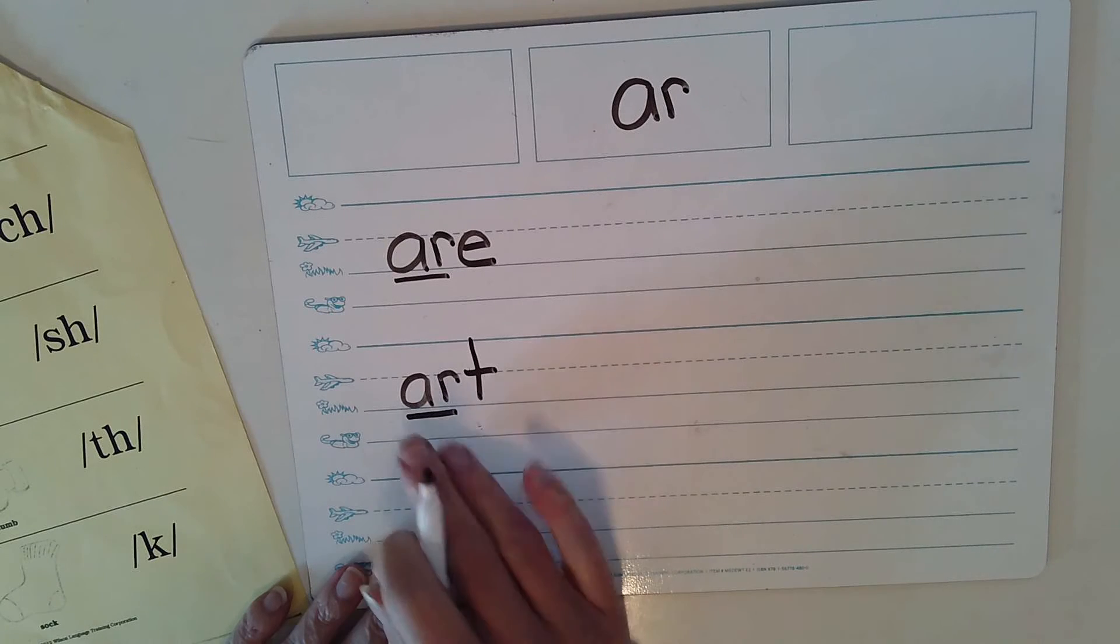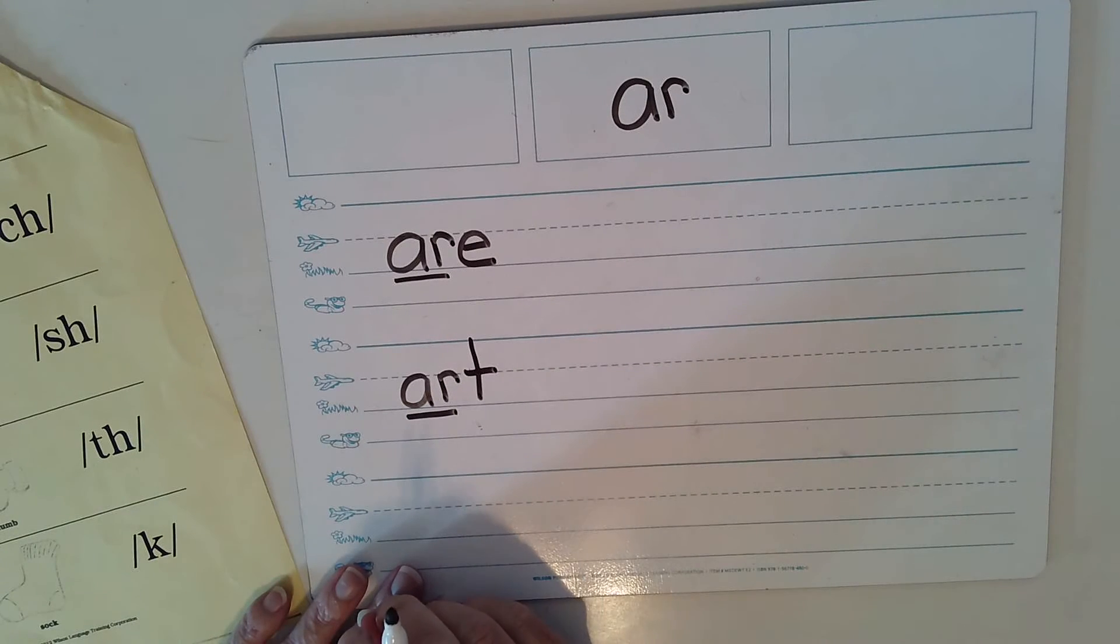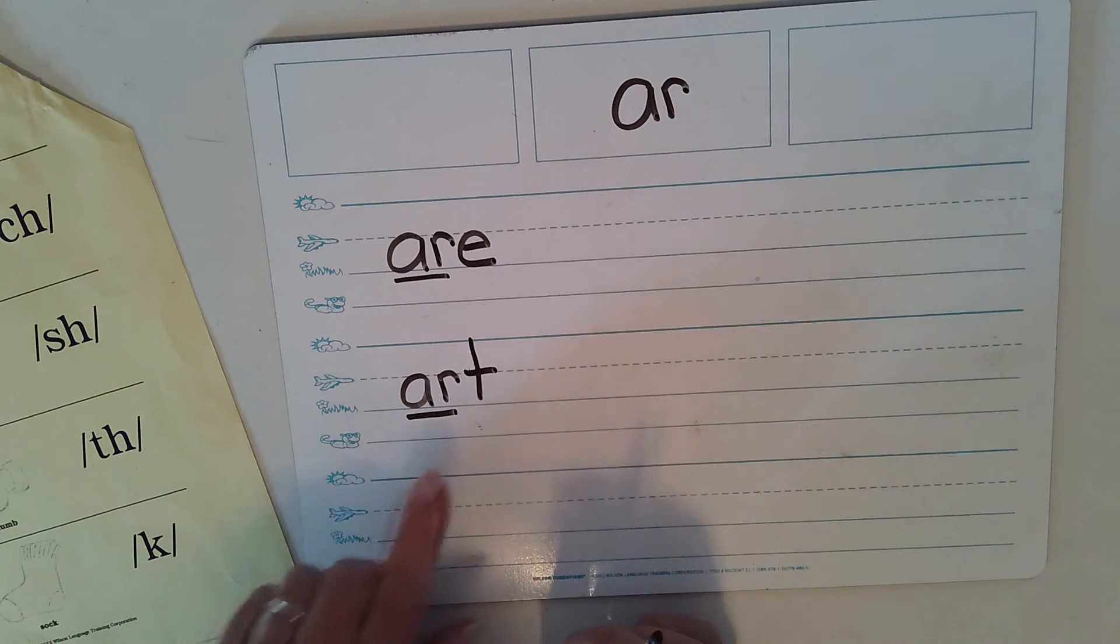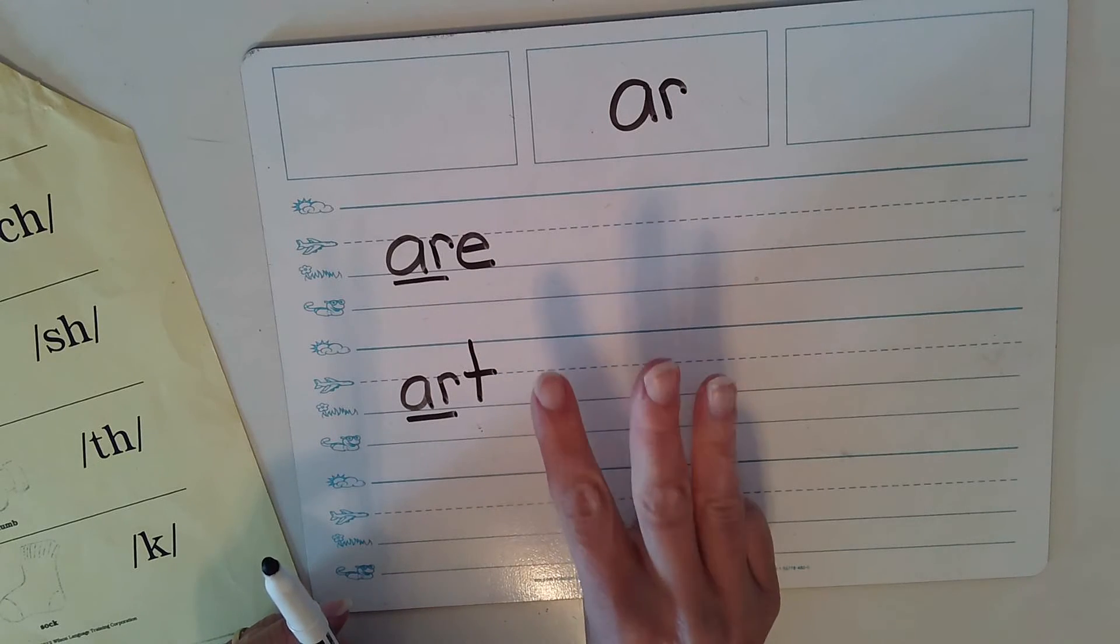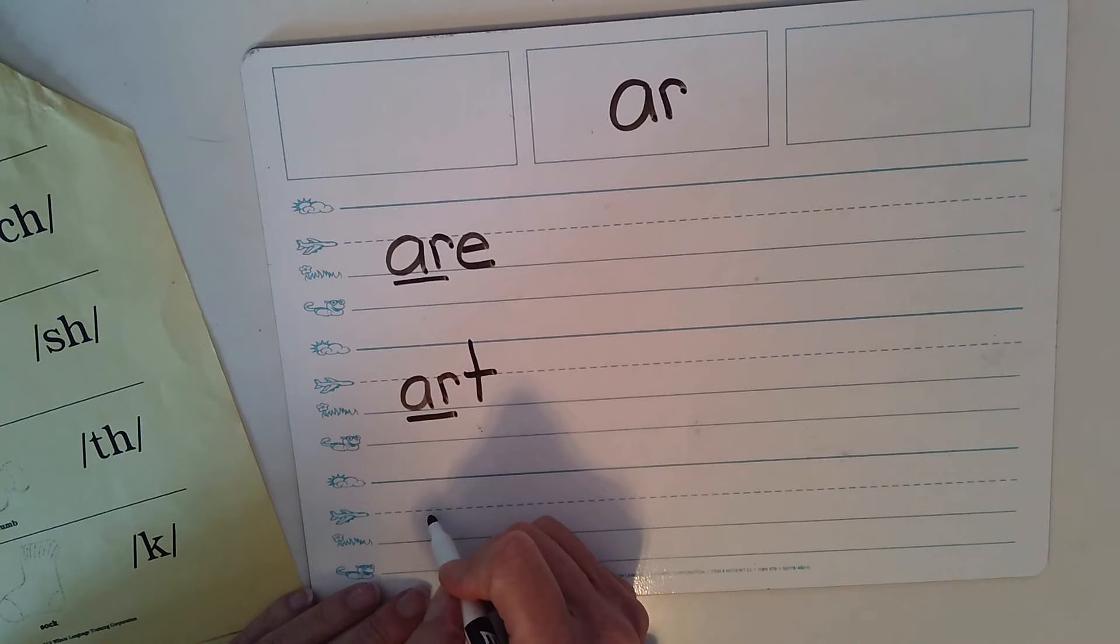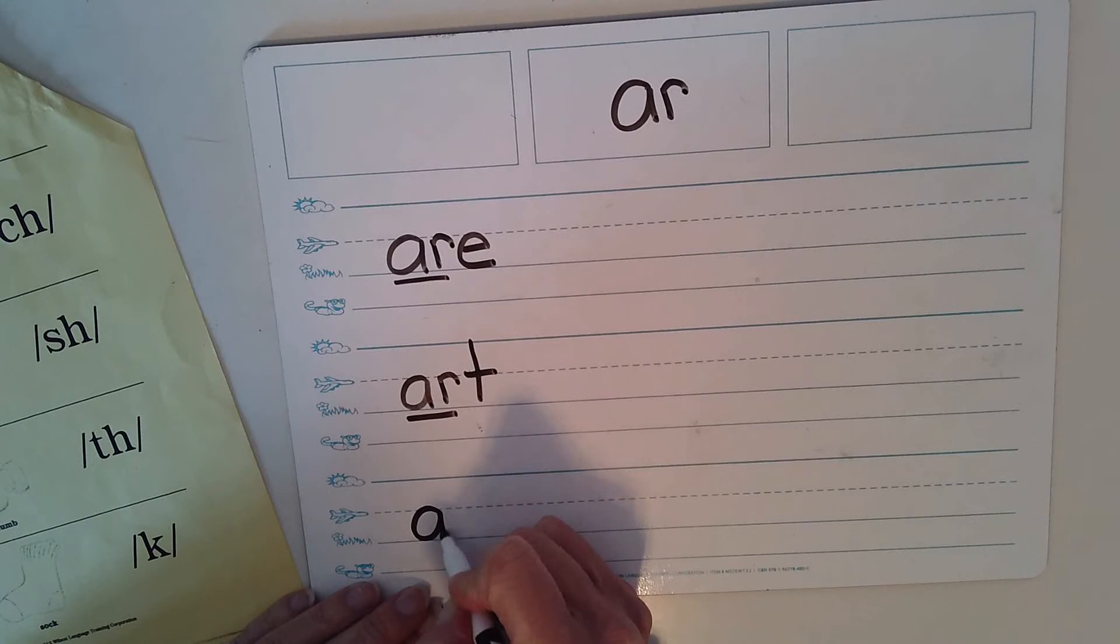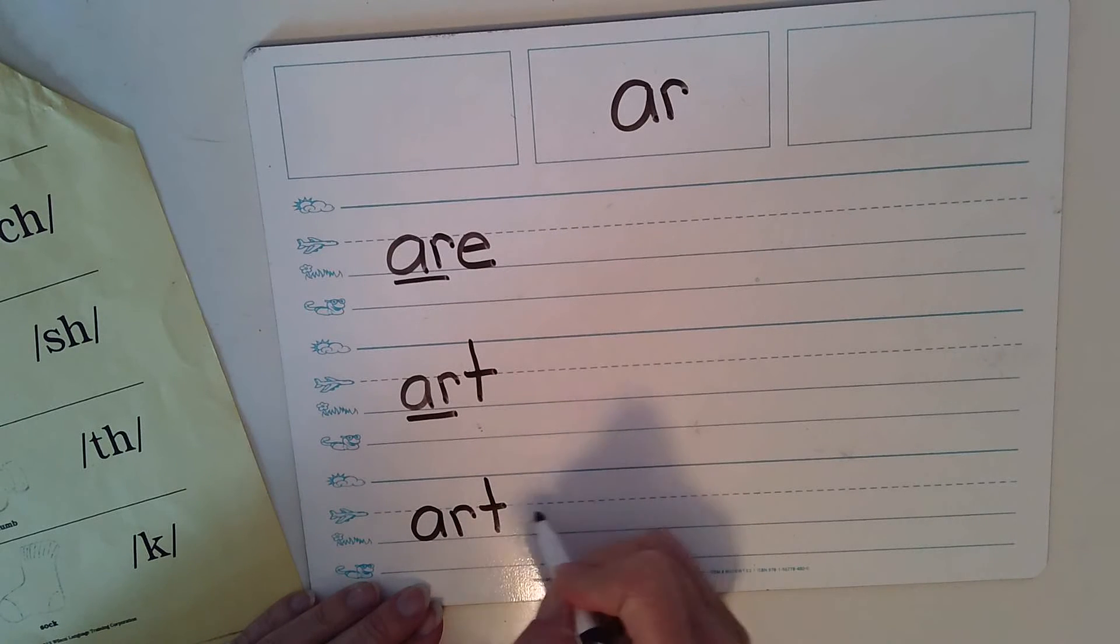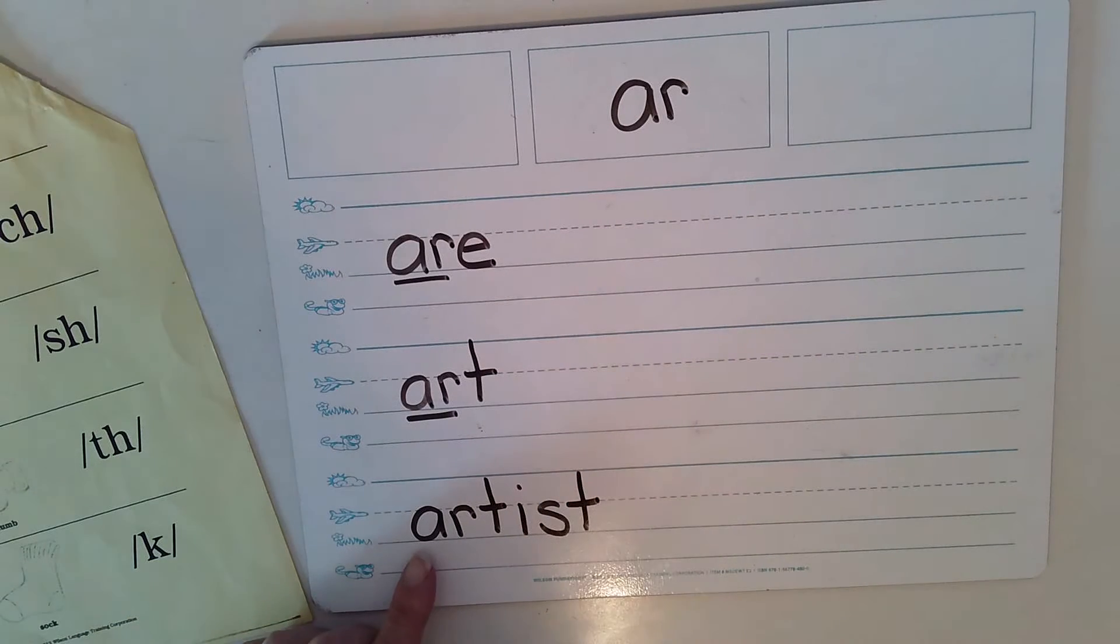Okay, let's stretch it even a little longer. What if I said you are an artist? Artist. So we have art and then ist. Artist. How would you write artist? Artist. Did you get it? Artist. If you forgot a sound, just add it in. Nice work.